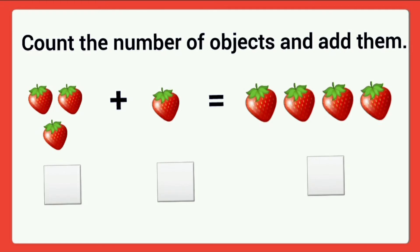Next worksheet: count the number of objects and add them. In the first group, how many strawberries? One, two, three. Write three in the given box. Then second group, how many strawberries? One. Write one in the box. Then total strawberries are one, two, three, four. That is three plus one is equal to four.